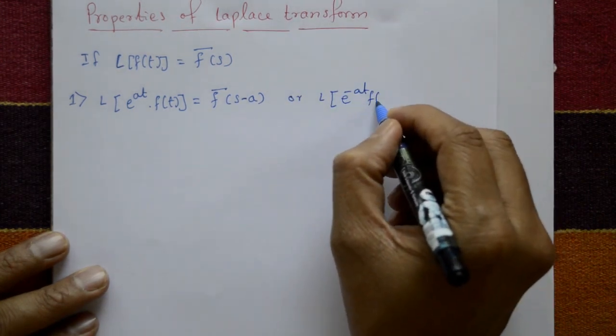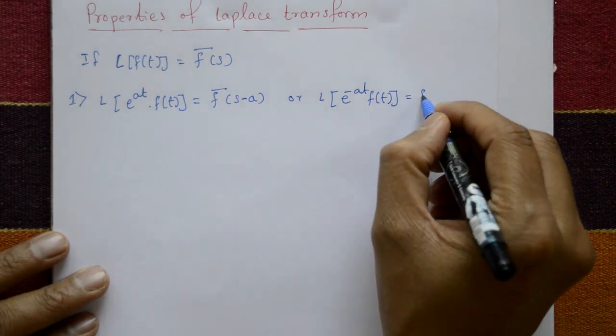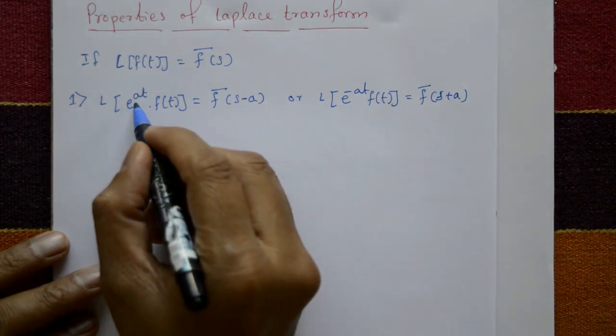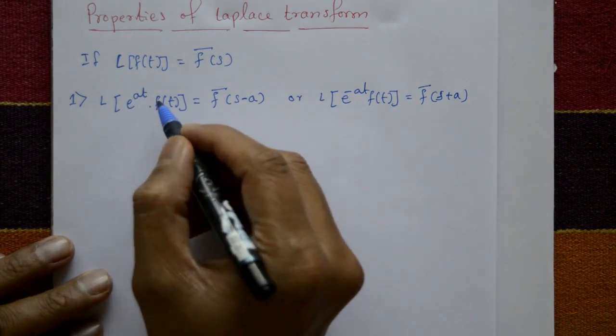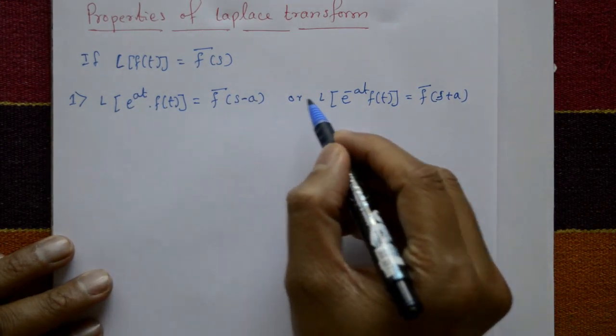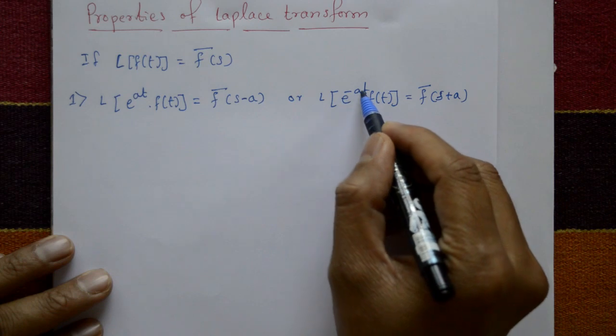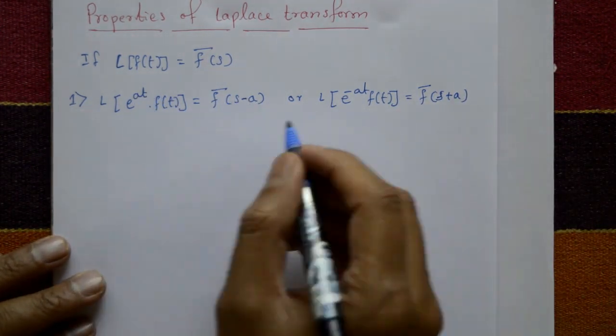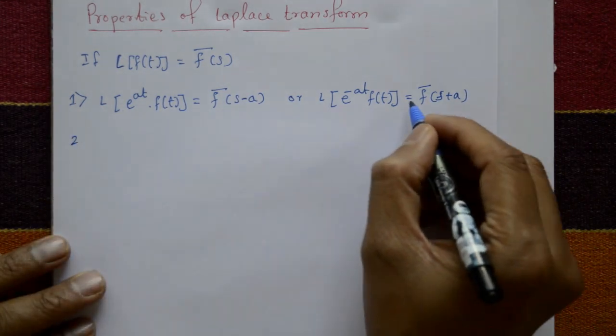...e^(-at)f(t) is equal to f̄(s+a). See, e^(at)f(t) is f̄(s-a), and e^(-at)f(t) is f̄(s+a). The sign is interchanged, and this property is called the shifting property.